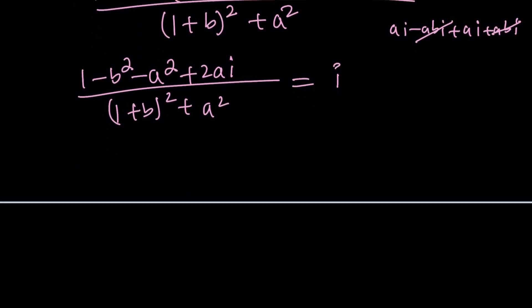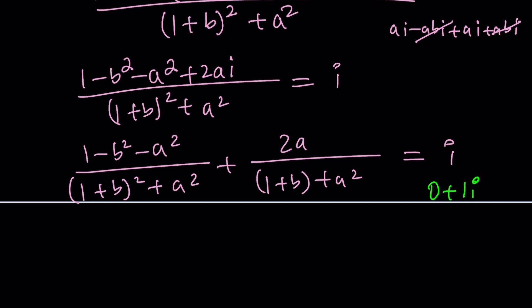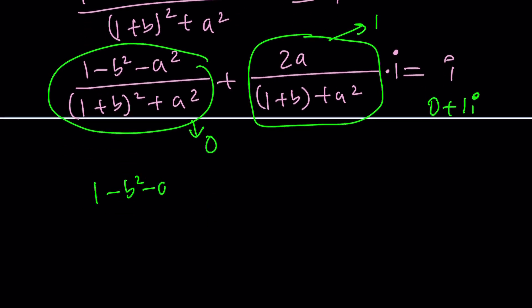Let's simplify more. We have 1 minus b squared minus a squared, that's the real part. Adding the imaginary parts we get 2ai. This equals i. Now how do you set two complex numbers equal to each other? You separate the real and imaginary parts. We need i which is 0 plus 1i. So the coefficient of i which is the imaginary part should be 1, and this needs to be 0 because there is no real part. That gives us a squared plus b squared equals 1.